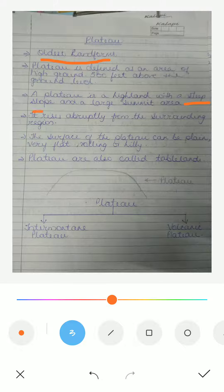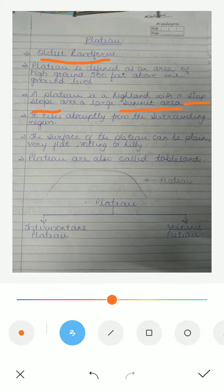It has a large summit area. Summit means the highest point in elevation compared to the adjoining areas. A plateau rises abruptly from the surrounding region, and these plateaus are formed by the upward movement in the earth's crust.